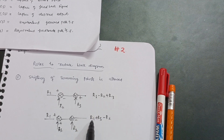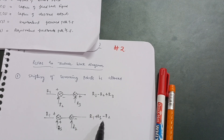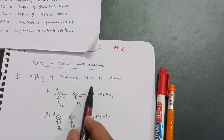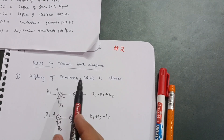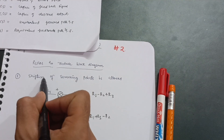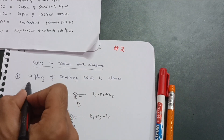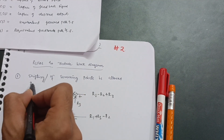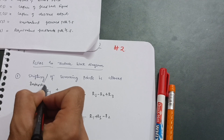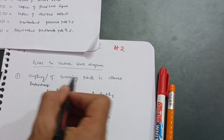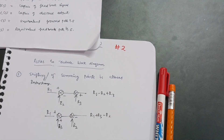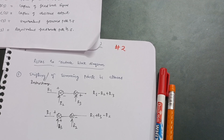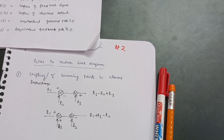So R1 minus R2 plus R3 — you can observe this is the same result. Interchange of summing points is allowed in the block diagram reduction. This is the first rule which you should remember; it will definitely help you in solving problems.